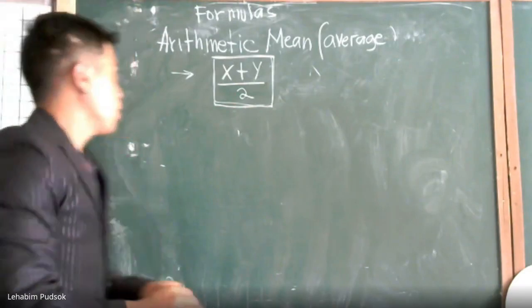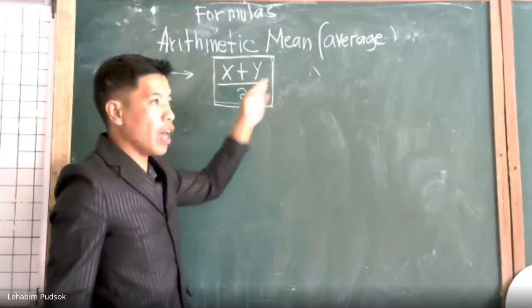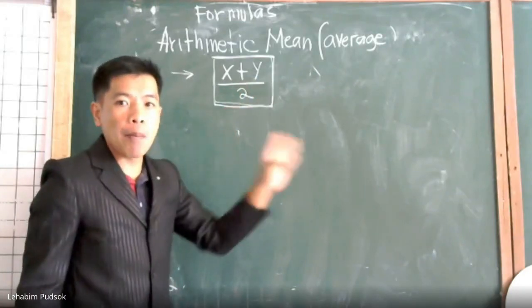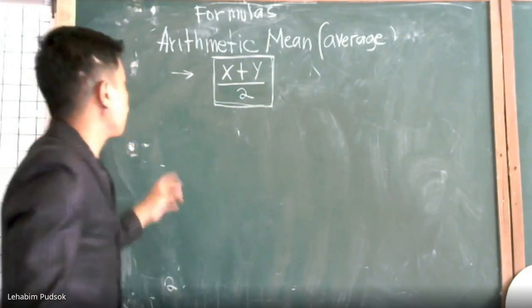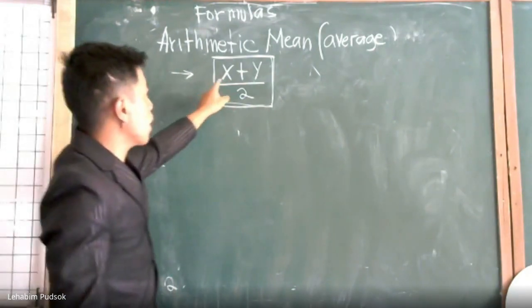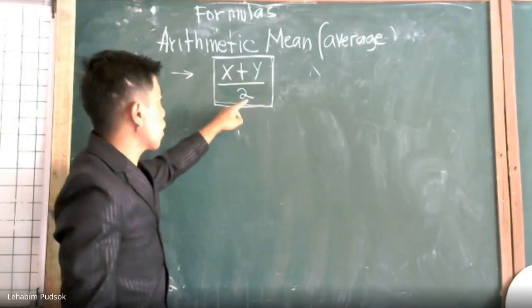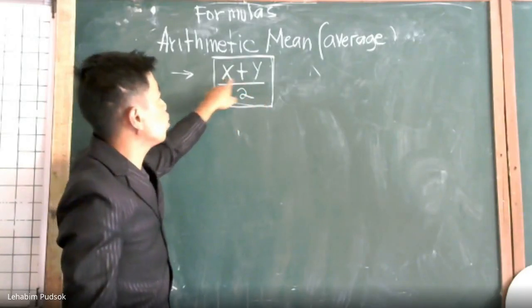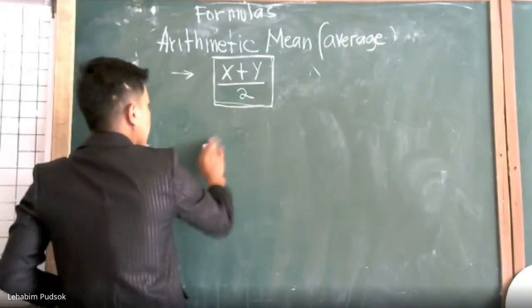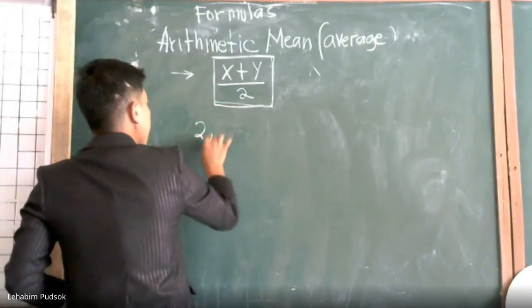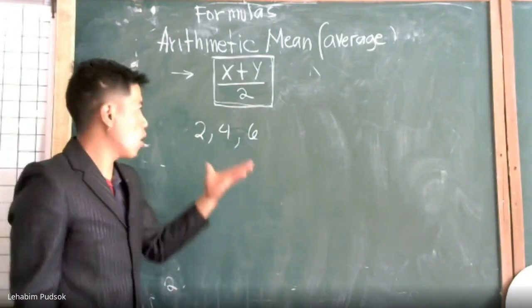Meaning you add all and divide it by the number of participants. For example, the formula is x plus y all over 2. Why is it divided by 2? Because there are only 2 terms. For example, we have here a sequence which is 2, 4, 6 — 3 terms.